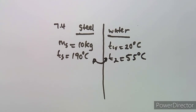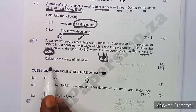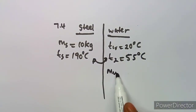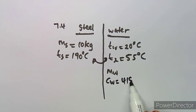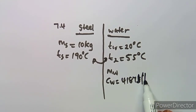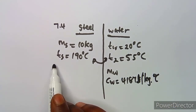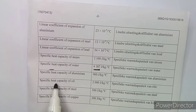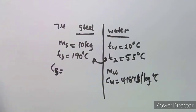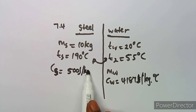The question asks us to calculate the mass of water. To do this, we need the specific heat capacity of water, which is 4187 joules per kilogram degree Celsius, and the specific heat capacity of steel, which is 500 joules per kilogram degree Celsius.